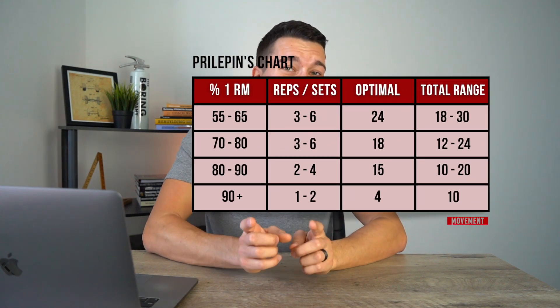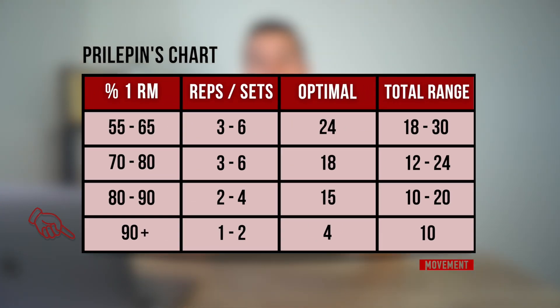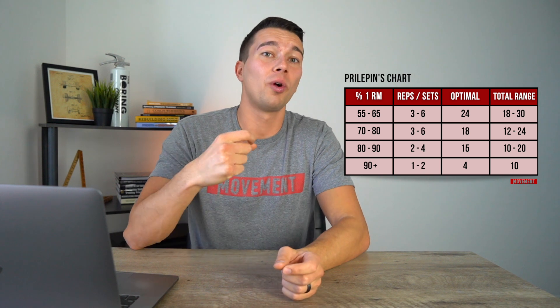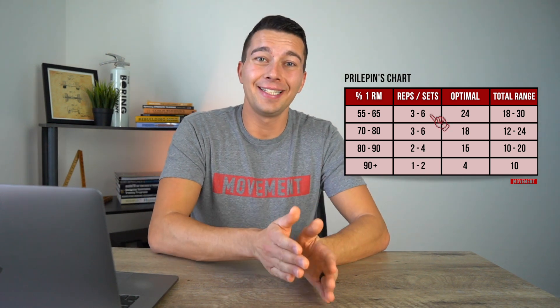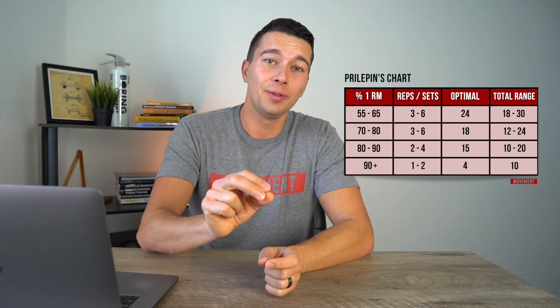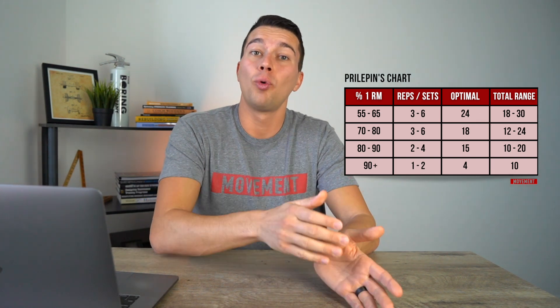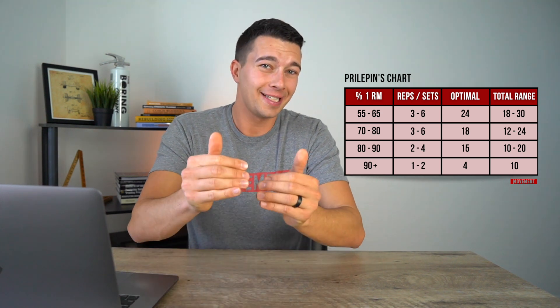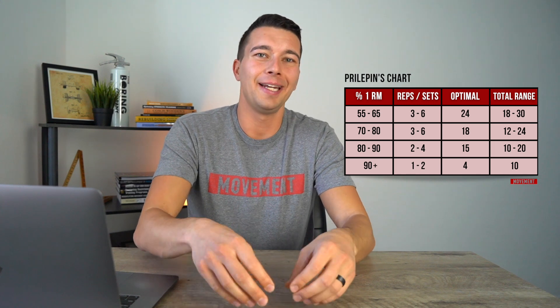This is for strength and power programming for the primary lifts — Olympic lifts and your compound main barbell lifts. On the leftmost side of the chart, you can see percent one-rep max, ranging from 55% to 90%+. When doing strength and power movements with lower weight, around 55 to 65% one-rep max, we can handle more volume — up to three to six sets of three to six reps. Ideally, we'd target around 24 reps total. For example, four sets of six at around 60% one-rep max.